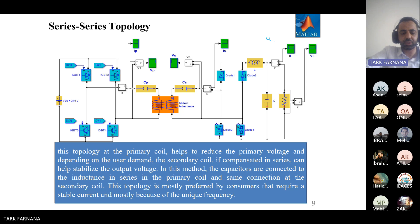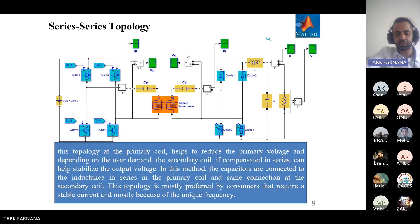First one is series-series typology. As you see in this circuit, we have an input DC source connected with a high frequency inverter to get AC voltage with high frequency, then connected to a series-resonant circuit to receive energy from the primary to secondary coil. The secondary coil is also connected with a rectifier to convert AC voltage to DC for charging.